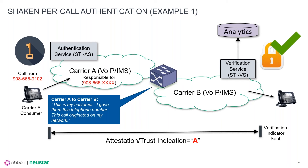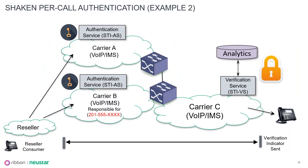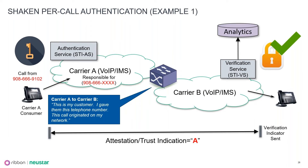Everything on the analytics and the STIR/SHAKEN verification should, under normal conditions, verify. The terminating provider has no real information in this case to treat this call any differently than what I would say as highly trusted, unless the analytics really showed something otherwise. I'm assuming that the analytics is going to support this consumer case. The last thing here is that the indicator sent on the wire is the concept of a Verstat — V-E-R-S-T-A-T — attribute. That's defined in the 3GPP standards, and it's a simple indication of what happened as part of the verification process at this point in time.